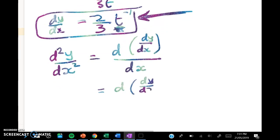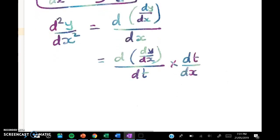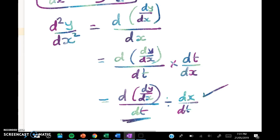We take our dy/dx and we differentiate it with respect to t. Then we multiply through by dt/dx but we know that that's the same as dividing by dx/dt. And we've already got that and this is not going to be very hard to work out.